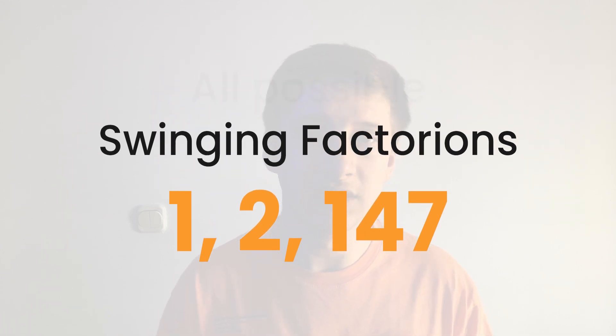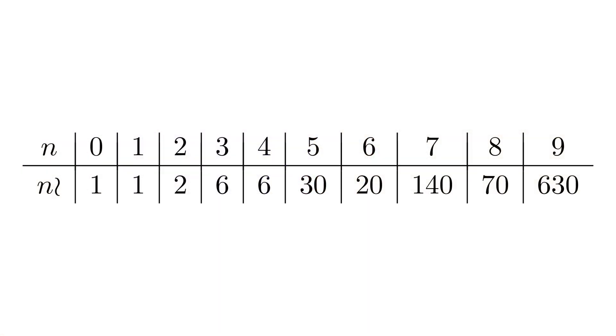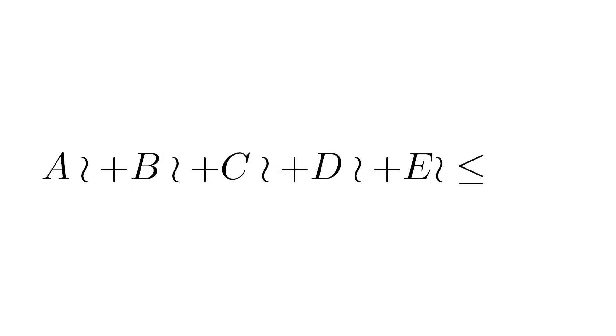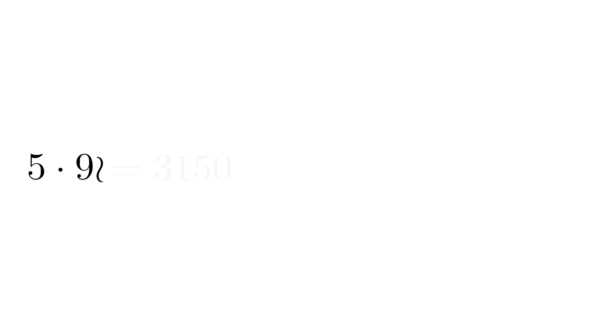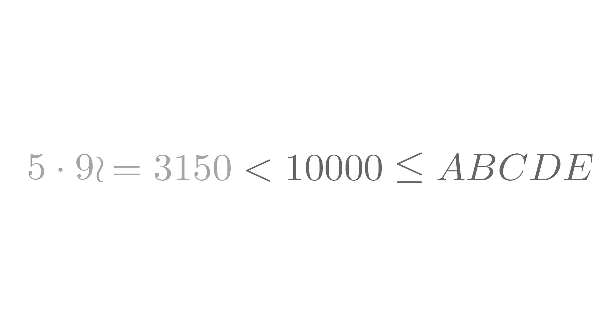It turns out those are the only ones, and here's why. We notice that swing factorial of 9 is the largest among the digits' swing factorials. For any 5-digit number ABCDE, the sum of swing factorials of its digits must be less than 5 times swing factorial of 9. That equals 3150, which is clearly a 4-digit number — smaller than any 5-digit number. Hence, no 5-digit integer can be a swinging factorion, and since this method applies to any number with more than 5 digits, swinging factorions must have 4 or fewer digits. This method can also prove finiteness for any type of factorion, including those from the functions mentioned by Blackpen Redpen.